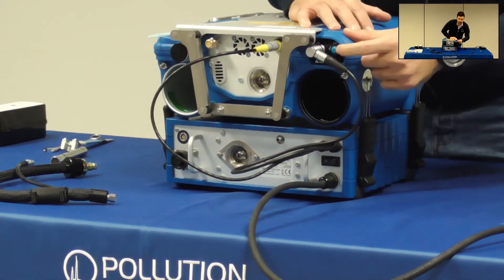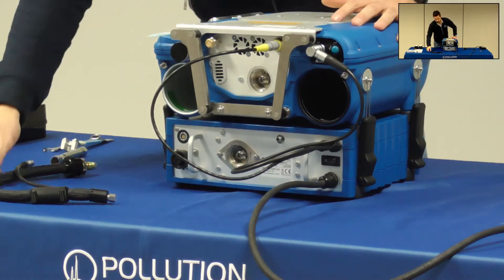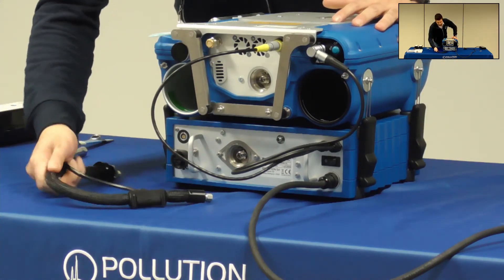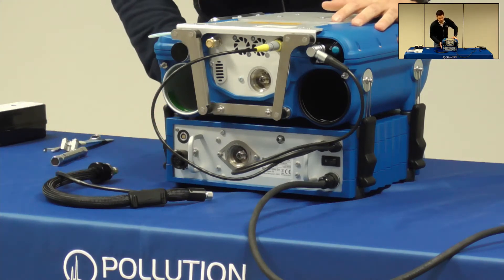And finally you have the heated transfer line. This heated transfer line will allow the gas to flow from the docking station to the Polaris.